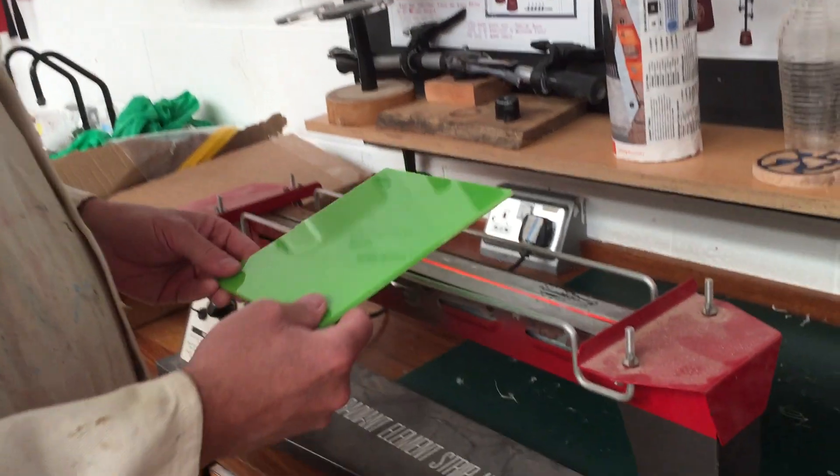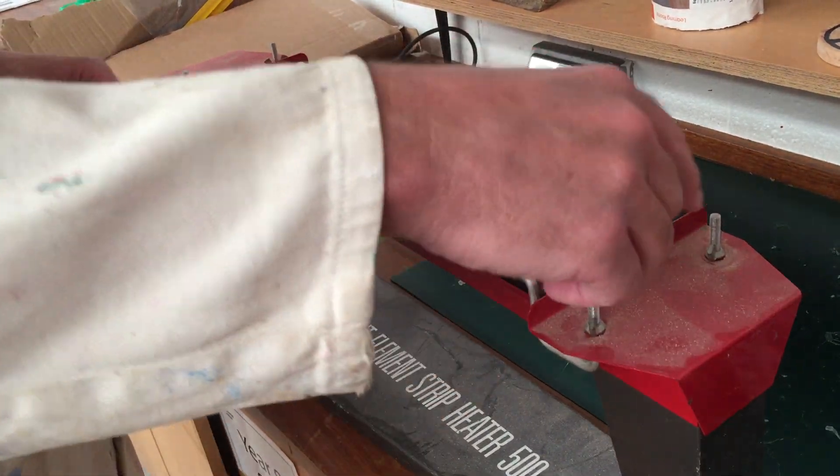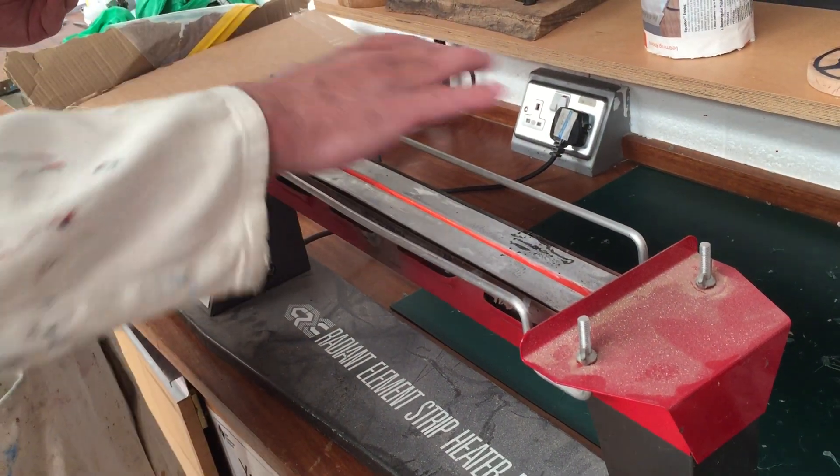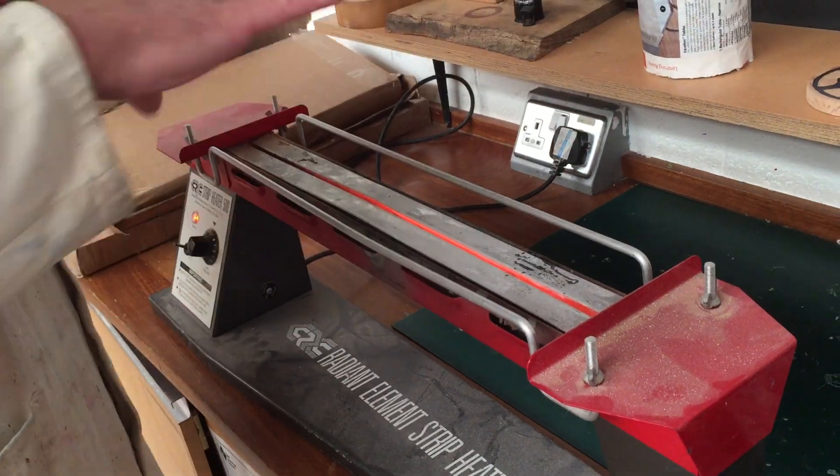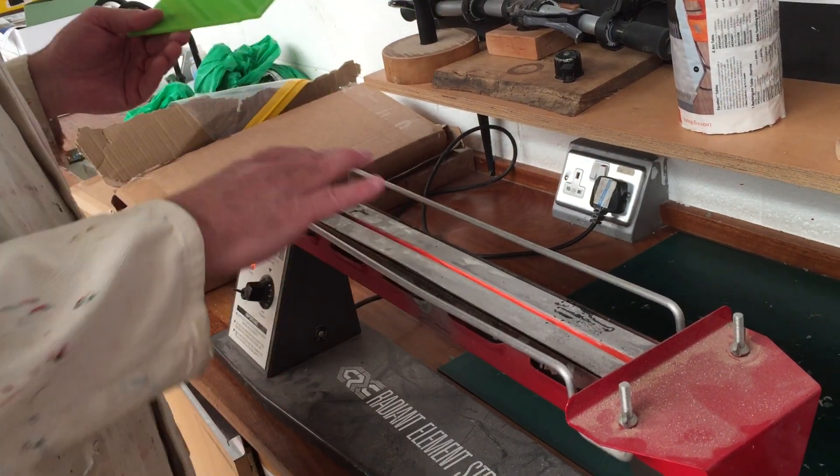Now I'm going to place this piece of acrylic over the element. The element is glowing brightly orange—it is very hot, like an electric fire burning away. If I was to touch that, I would be in great deal of pain and probably need hospital treatment.